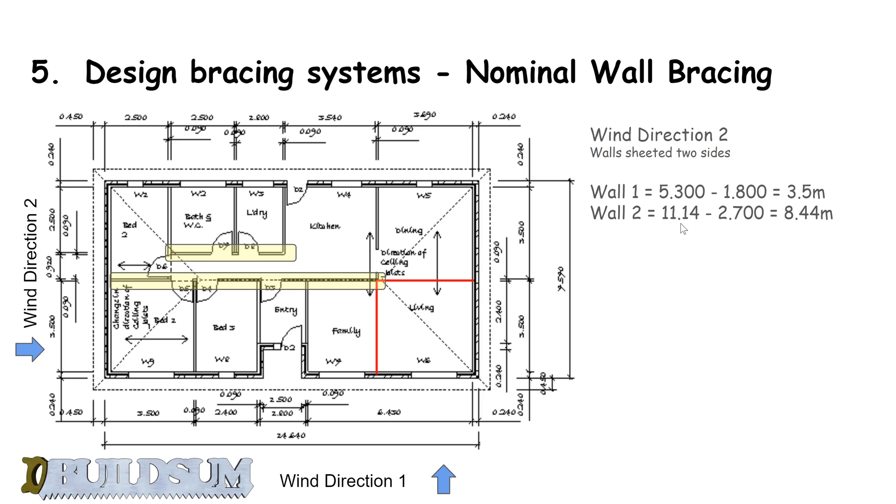Wall 2 is the longer one here - 11.14 meters long. I've taken away 2.7 for all the doorways, which gives me an effective length of 8.44. Add them together, times it by the bracing capacity for double-sided walls, and that gives me 8.955 kilonewtons of resistance in that direction.